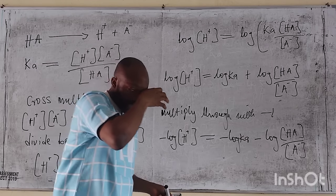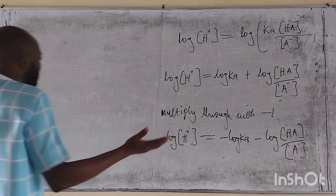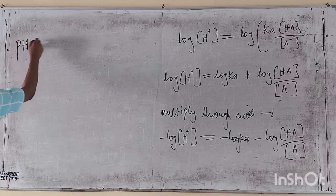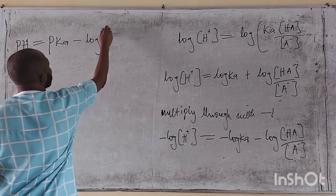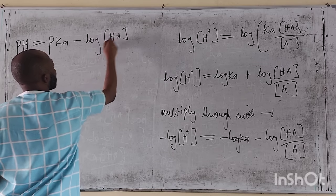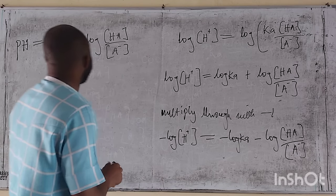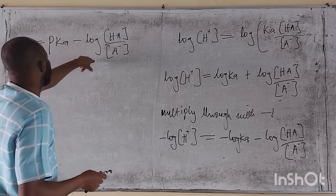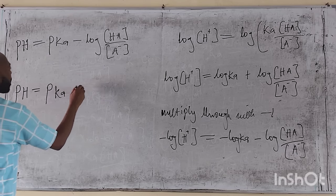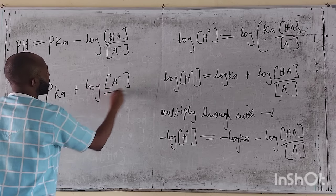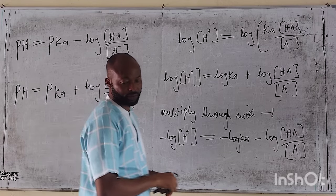Since minus log H⁺ is pH and minus log Ka is pKa: pH equals pKa minus log of HA over A⁻. Taking the inverse of the ratio changes the sign to plus, giving us pH equals pKa plus log of A⁻ over HA. This is the Henderson-Hasselbalch equation.